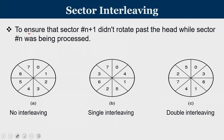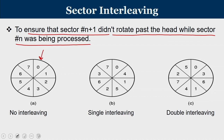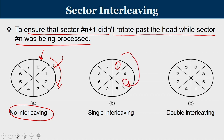Sector interleaving ensures that sector N+1 does not rotate past the head while sector N is being processed. Without interleaving, by the time you finish processing sector 0 and try to read sector 1, the platter may have already rotated past sector 1 to sector 2. With single interleaving, the sectors are arranged so that after processing one sector the very next sector arrives under the head. With double interleaving, adjacent physical sectors are separated by 2 logical positions. This ensures the correct sector is always ready when the head is ready to read it.